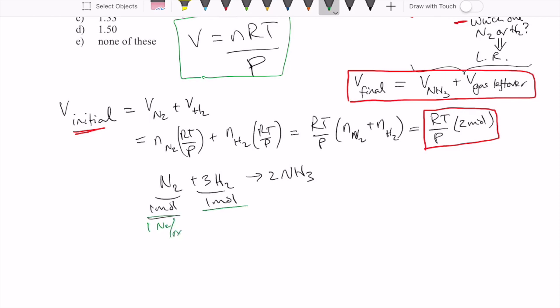So 1 N2 per reaction, and then this one is 3 H2 per reaction. This one is going to give us one reaction, and this one is going to give us one third of a reaction or 0.333 reaction. So H2 is our limiting reactant because it gives us fewer reactions. That tells us that N2 is the excess reactant.